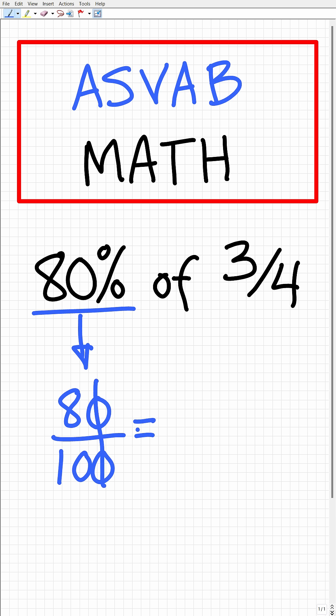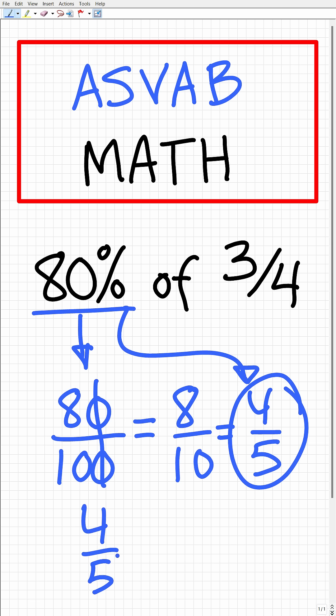Now, we can reduce this down to 8 over 10, or 2 goes into 8 four times, and 2 goes into 10 five times. So 80% effectively is the same thing as the fraction four-fifths. We're going to take that and multiply it by three-fourths. So four-fifths times three-fourths equals what? We're going to cross-cancel the fours, and we end up with three over five, and three-fifths is equivalent to the decimal 0.6.